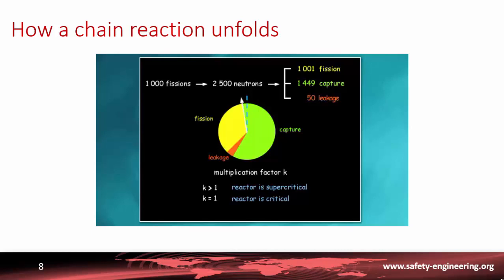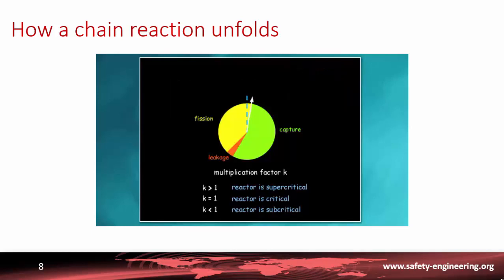If, conversely, the number of captures is made to slightly increase relative to the fissions, and if the number of fissions is decreased — for instance from 1,000 to 998 — the multiplication factor is then less than 1, in which case the reaction is said to be subcritical, and the power level decreases. It will later be seen how it is possible to vary the multiplication factor by using the control rods or the boron present in the primary circuit, to adjust the reactor power as required.